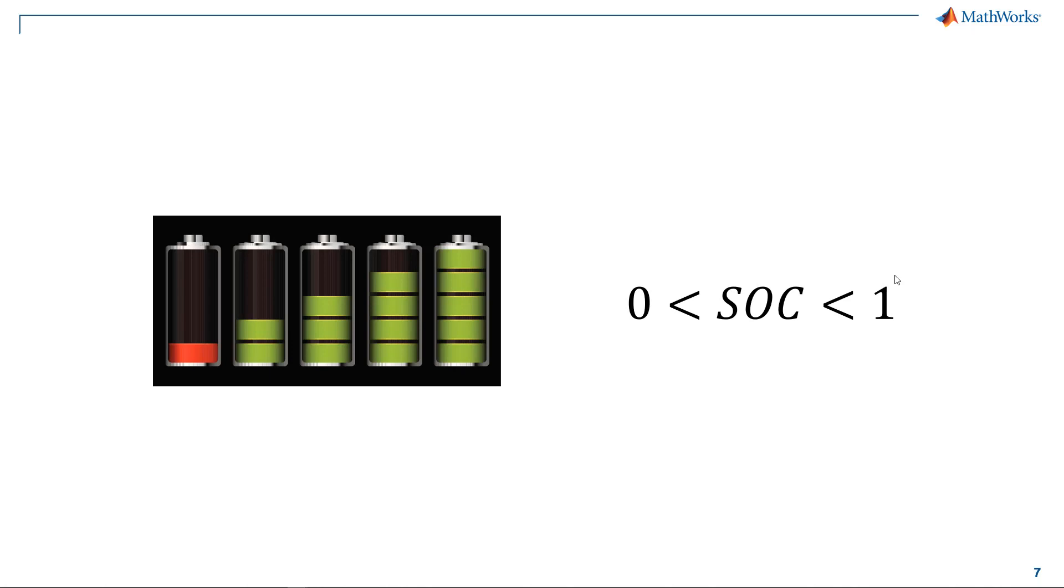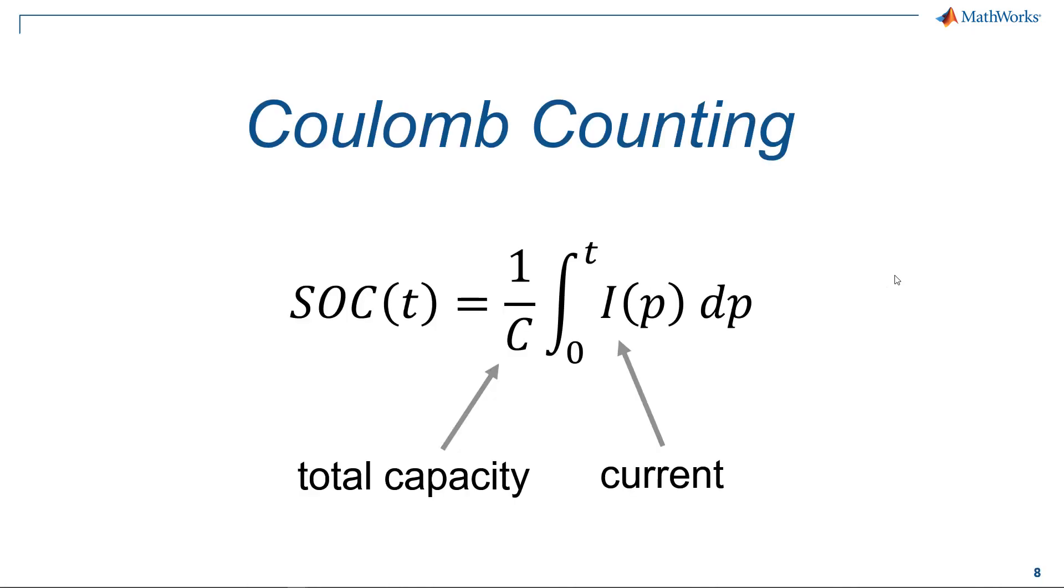The easiest way to estimate state of charge is integrating current. By definition, the SOC is the integral of the current flowing in and out of the cell over the total capacity. This method is simple and computationally cheap.